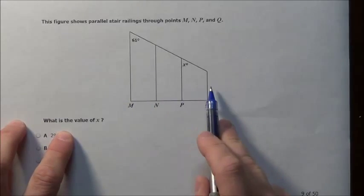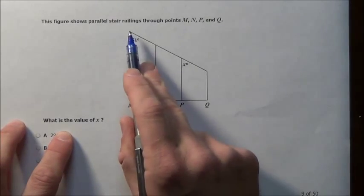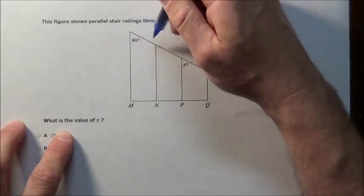These stair railings are all parallel. It gave us 61. So what can we conclude? Well this is a transversal right here.